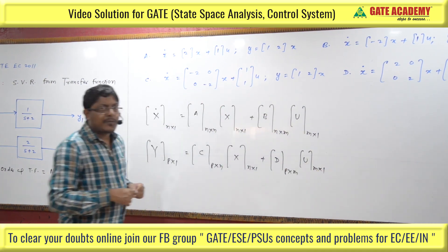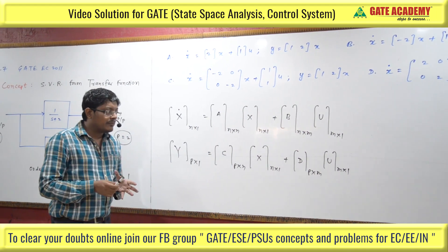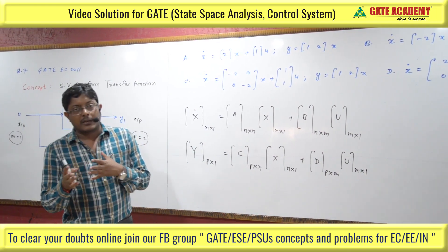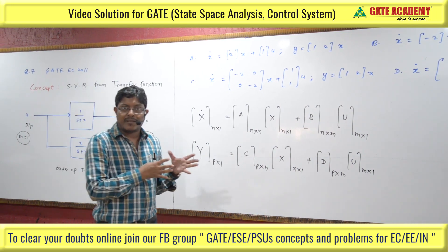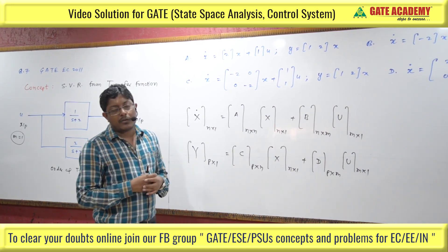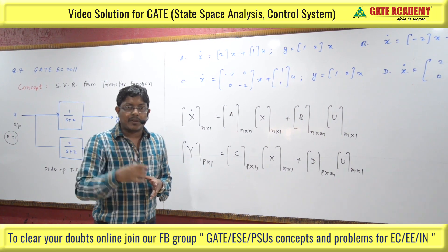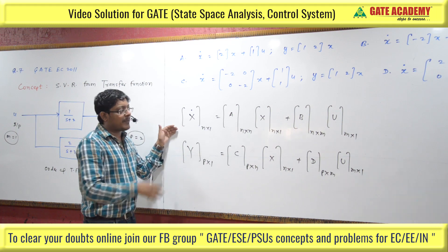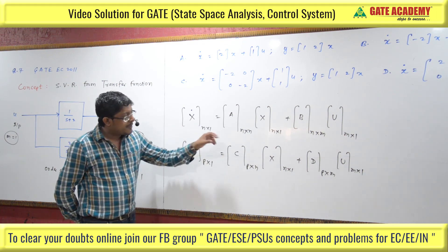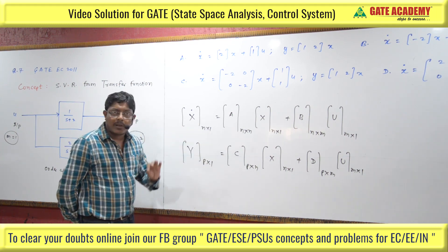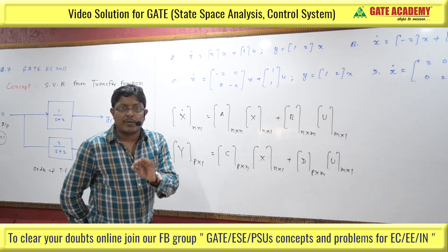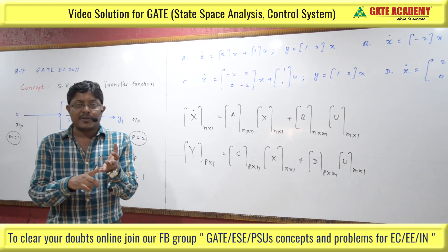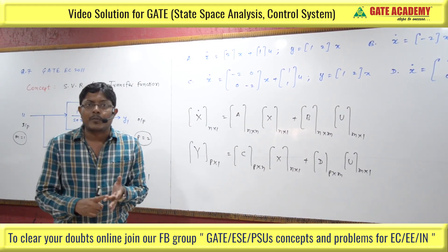In most cases the D matrix equals zero, because the D matrix only exists if there is a direct input-output relationship. Otherwise D matrix is zero. It is very important to be clear about what is written where: where N appears it is the number of state variables, where M appears it is the number of inputs, and where P appears it is the number of outputs.